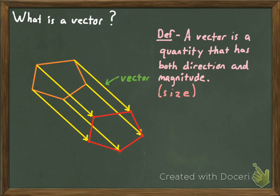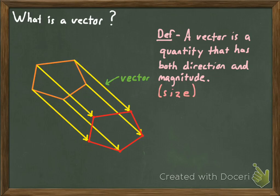Part of that definition seems a little weird because it calls a vector a quantity when it looks like a vector is a geometric figure — and both are really true. The reason we mention that a vector is a quantity is because vectors are used for so many real-world applications. As you'll see in a physics class, for instance, a vector can represent a force, acceleration, or a lot of different things. The point here is that a vector has a definite direction and a magnitude or size, meaning it has a definite length.